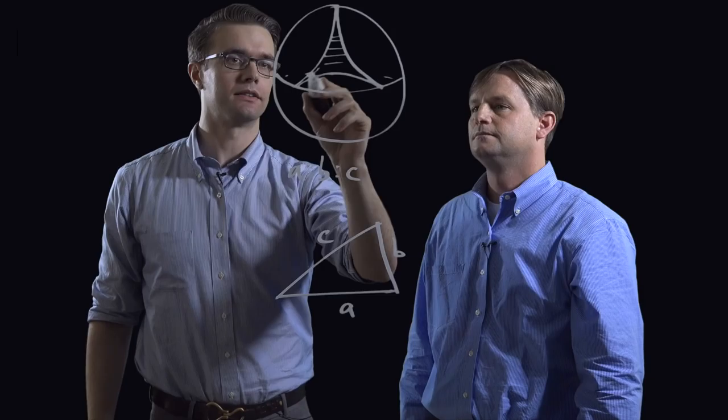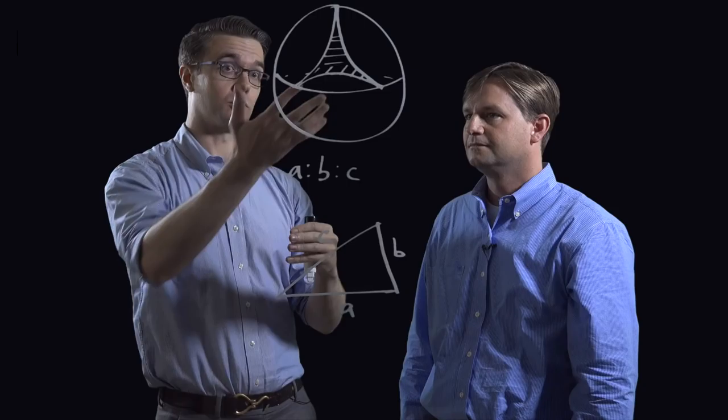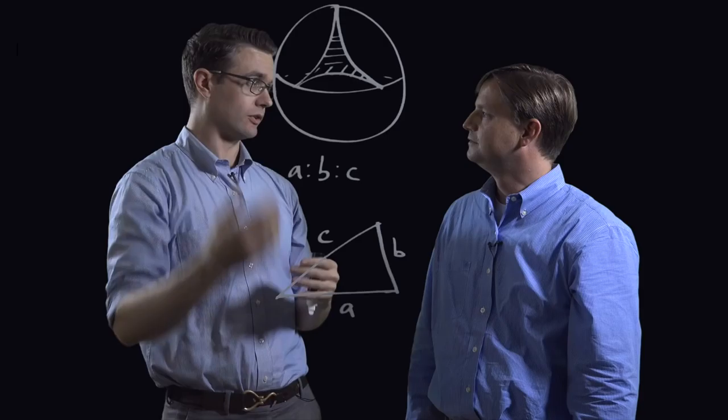And then where are the acute ones? So the acute ones, it turns out, are inside of this funny-looking shape. And so then you can just find what's the area of that funny-looking shape? And it's about 16% of the area of the whole sphere.